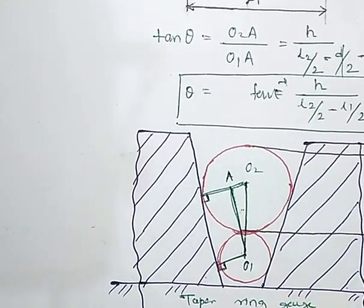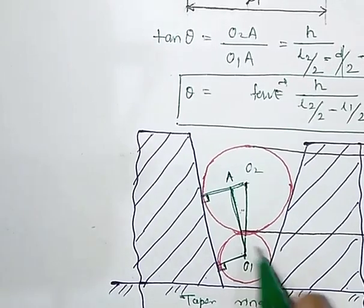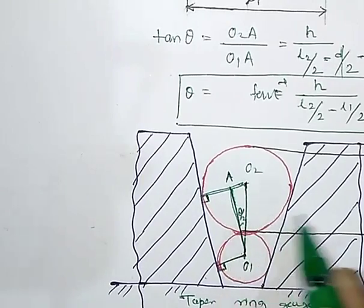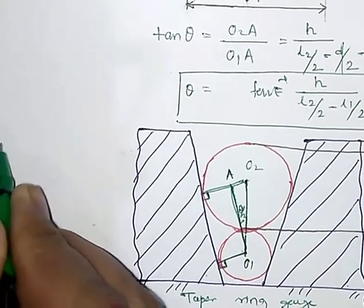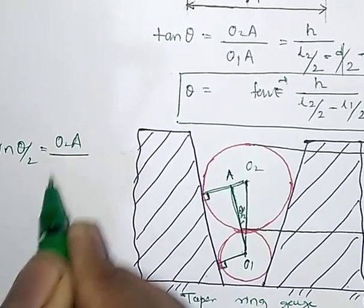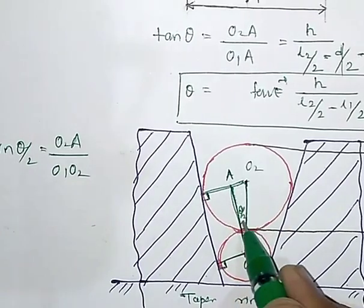Now apply sine principle. Sine theta by 2. Why am I writing theta by 2? Because this is theta by 2 which is actually half of the total angle. Here I will write sine theta by 2 is equal to O2A divided by O1O2. So we have theta by 2 here.